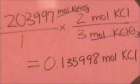Now, if they asked us how many moles of KCl we have, this would be our answer. But they want to know how many grams. So we need to multiply the moles of KClO3 times the molar mass of potassium chloride.